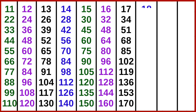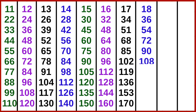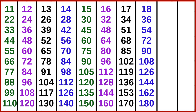18 ones are 18, 18 twos are 36, 18 threes are 54, 18 fours are 72, 18 fives are 90, 18 six are 108, 18 sevens are 126, 18 eights are 144, 18 nines are 162, 18 tens are 180.